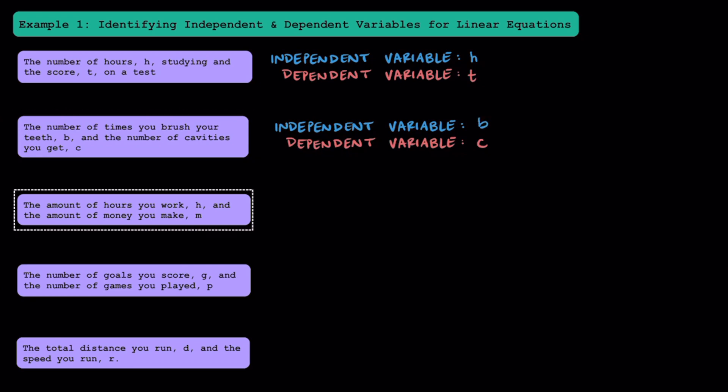The amount of hours you work, H, and the amount of money you make, M. Does the amount of hours depend on how much money you make, or does the amount of money you make depend on how many hours you work? The more logical combination here is that the amount of money you make is going to depend on how many hours you work. If you work more hours, you make more money; if you work less hours, you make less money. This is pretty common in the real world.